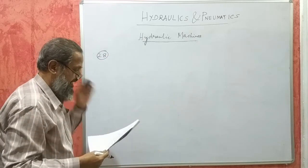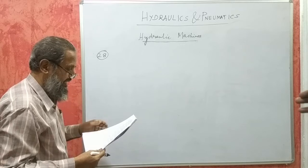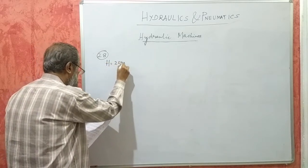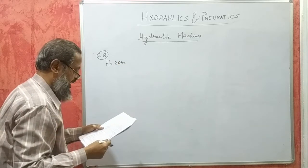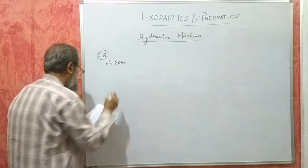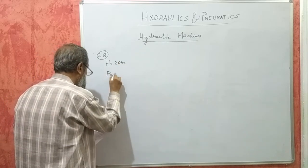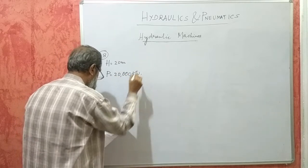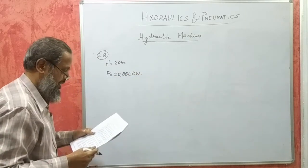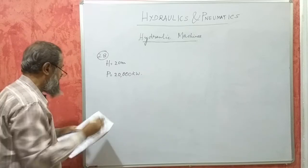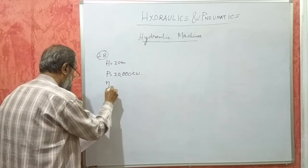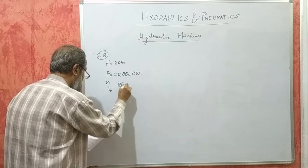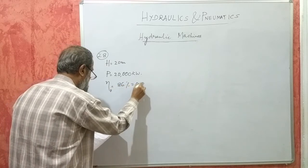A Kaplan turbine operating under a net head of 20 meters develops 20,000 kilowatt. That is the power with an overall efficiency of 86 percent, that is 0.86.